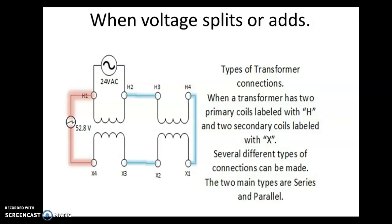When voltage splits or adds, something is done to the transformer. Assuming the transformer has four coils, two primary and two secondary, with primary being identified with H's and secondary being identified with X's, you can make several different connections to obtain voltages that are desired for an application.